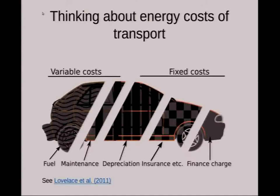Most academic work, and especially policy documents, only focus on the fuel part of it. But when you think about the financial cost of a car, you don't just think about the fuel — you think about all the other aspects as well. The same applies for energy. It actually costs a lot of energy to build a car, and that's usually not taken into account. Although in terms of energy the fuel is a much bigger proportion — around about 60% — I've found a way of including the energy costs of maintaining the roads, building the infrastructure, and building the car, as a per unit distance measure.